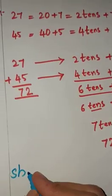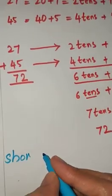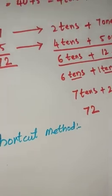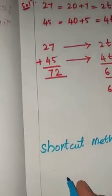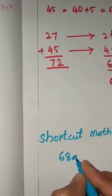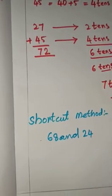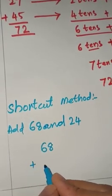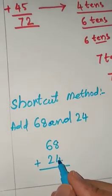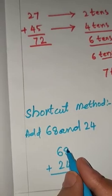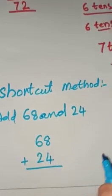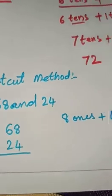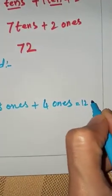Now I am explaining the shortcut method for addition with regrouping. We have to add 68 and 24. First we will add the numbers which are on the 1s place: 8 ones plus 4 ones. 8 ones plus 4 ones is equal to 12 ones.